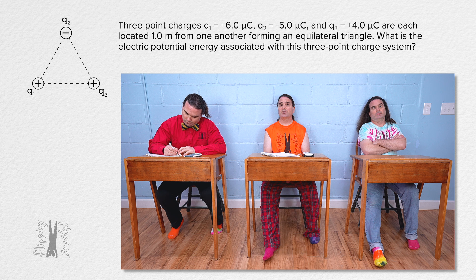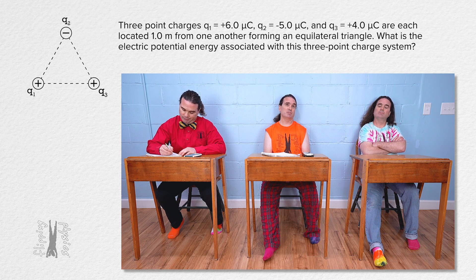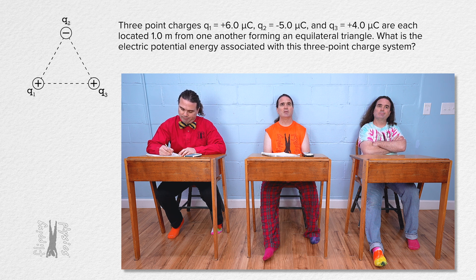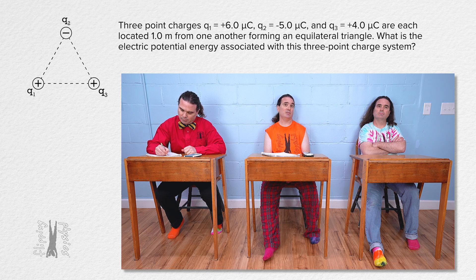Three point charges — charge q1 equal to positive 6.0 microcoulombs, charge q2 equal to negative 5.0 microcoulombs, and charge q3 equal to positive 4.0 microcoulombs — are each located 1.0 meters from one another forming an equilateral triangle. What is the electric potential energy associated with this 3-point charge system?